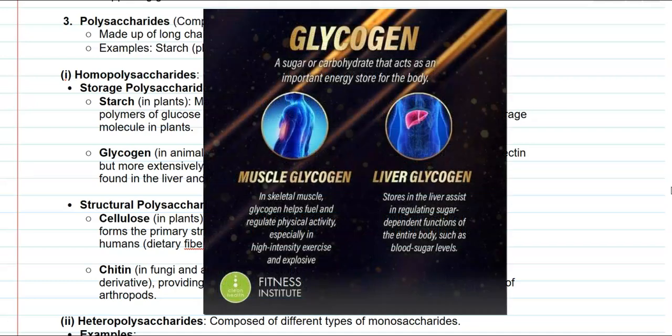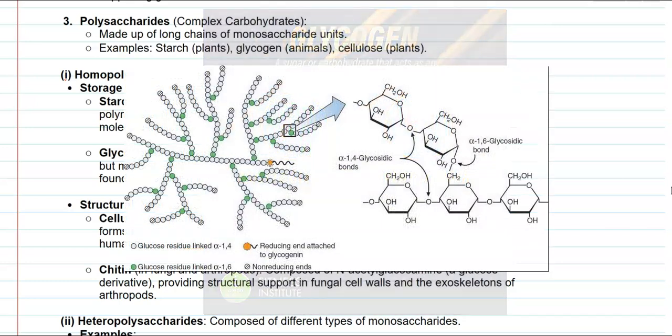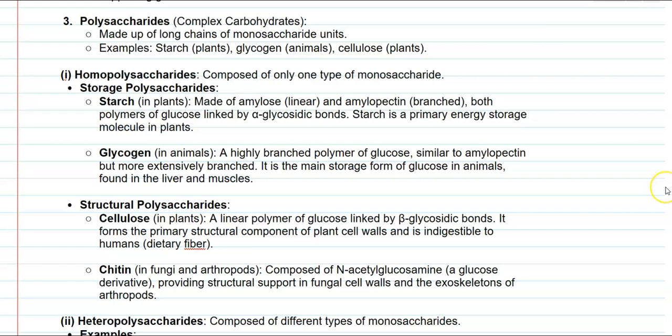A similar energy storage molecule in animals is glycogen. It is a highly branched polymer also made up of the monosaccharide glucose. It is similar in structure to amylopectin but more extensively branched. Glycogen is mainly excess glucose stored in the liver and muscles. When energy is depleted, it can be used as an energy source for living organisms.